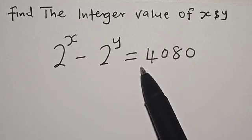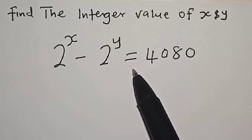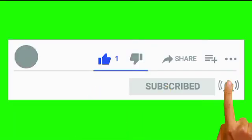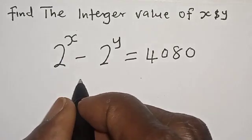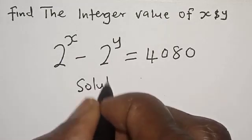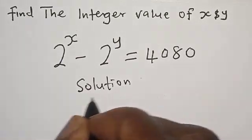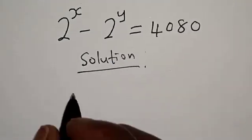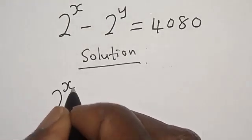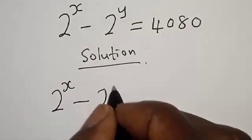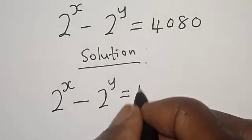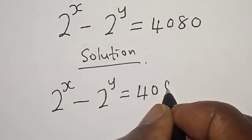But before we move on, please like, share, comment and subscribe. Thank you. Let's start with the solution. 2 raised to power x minus 2 raised to power y is equal to 4080.